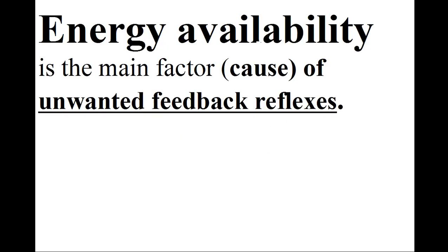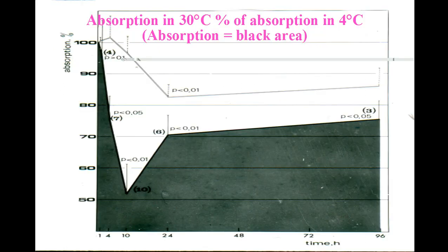Energy availability causes unwanted feedback reflexes. An important example is intestinal absorption, which is the final result of digestive and propulsive functions. I measured intestinal xylose absorption in 28 pairs of female rats, half kept at 6°C and half ad libitum at 30°C. On the ordinate, absorption in warm environment as percent of absorption in cold environment. Xylose was measured by deducting the amount remaining in the intestine from the administered amount. On the abscissa, the time spent in the assigned environment before the test. The difference between environments is already significant after 4 hours, becomes maximal after 10 hours, then the difference decreases for a recovery of absorption.